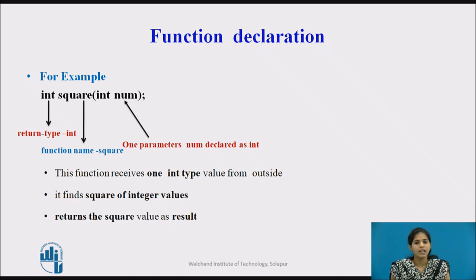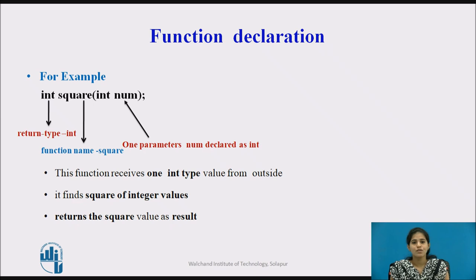Here the return type is integer, so this function will return an integer type result. This function receives one integer type value as input, calculates the square of the given integer number, and returns the result. The return type is integer, the name of the function is square, and it takes one parameter of integer type to calculate the square of the number.